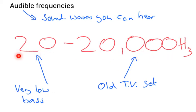20 hertz is a very low bass sound. 20,000 hertz—some old TV sets sometimes make this really annoying high-pitched whistling sound that often children can hear but adults can't, because after some time your hearing becomes progressively worse. Adults can't hear this high pitch whereas children actually can.